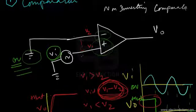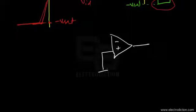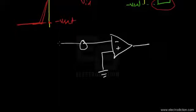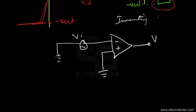On the other hand, if we go forward and make the circuit such that we ground the non-inverting input and apply this time-varying input signal to the inverting input of the op-amp, then this configuration would be known as the inverting comparator.